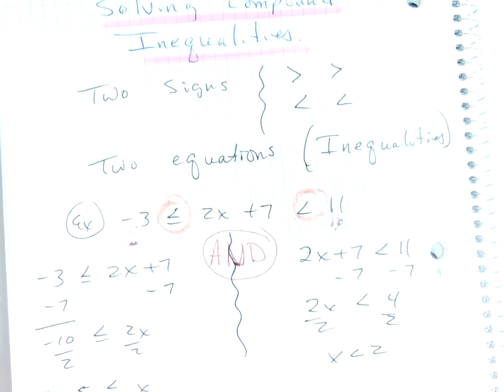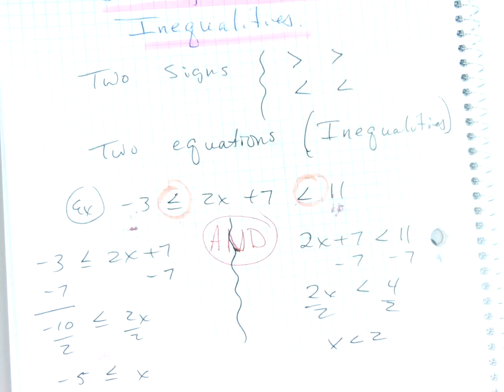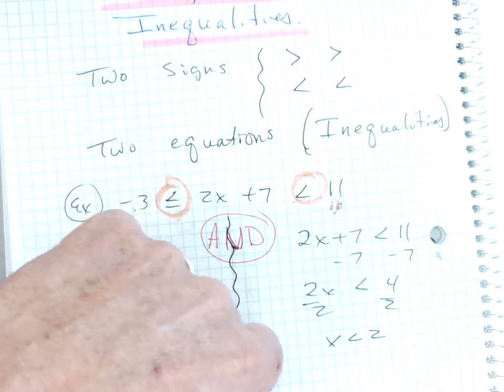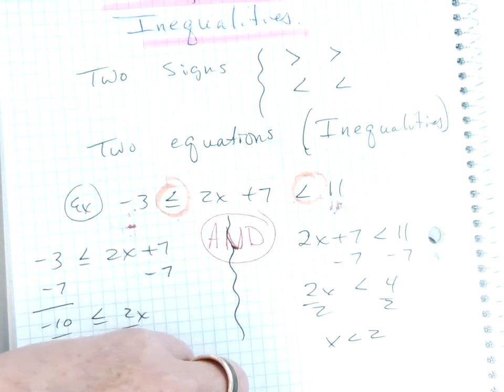So then we rewrite the answer as this: negative 5 is less than or equal to x, which is less than or equal to 2. Or if I read it backwards, x is greater than or equal to negative 5 and less than 2.